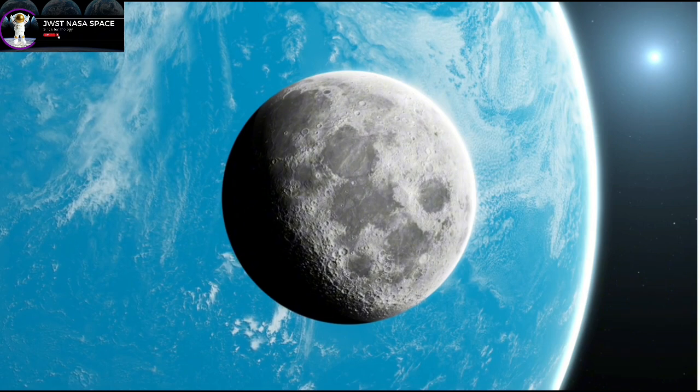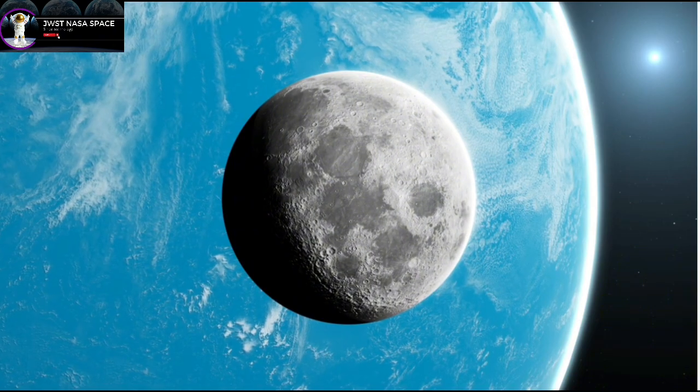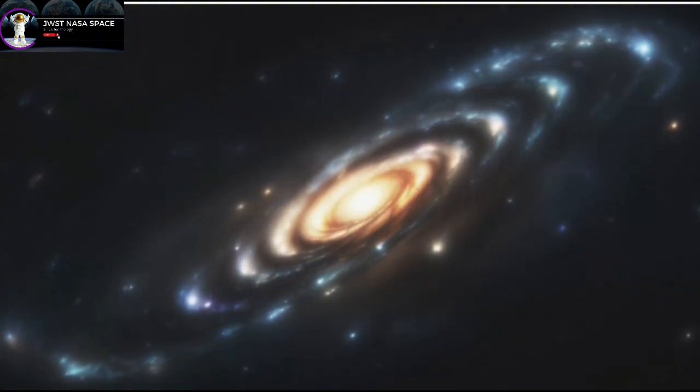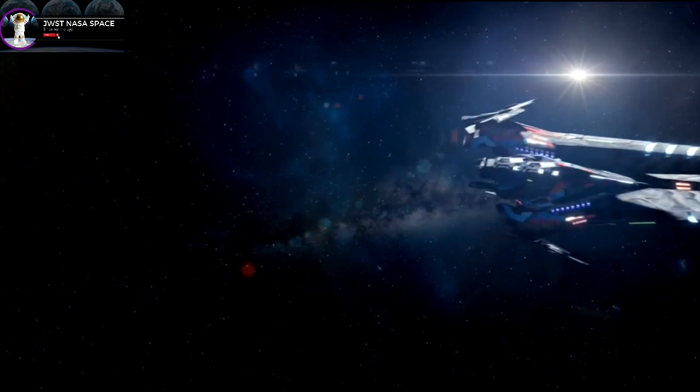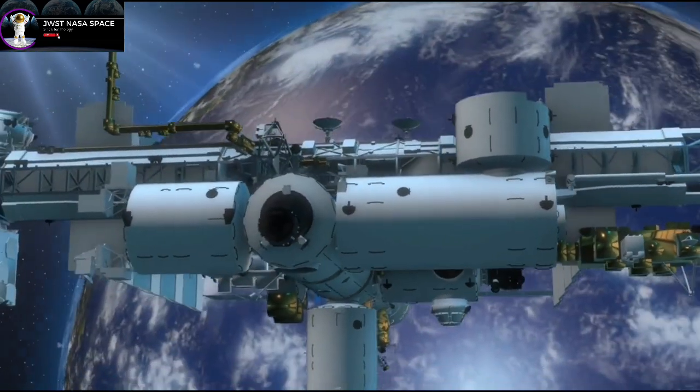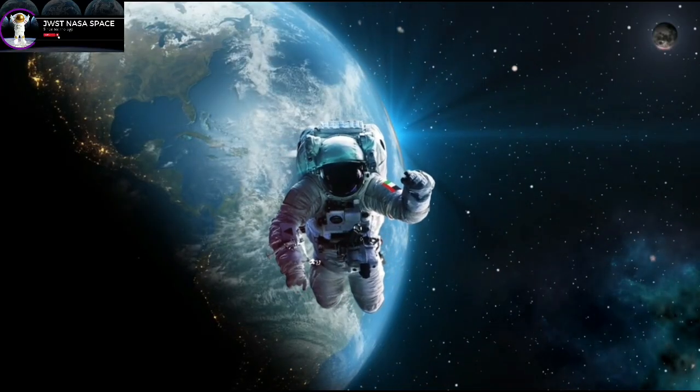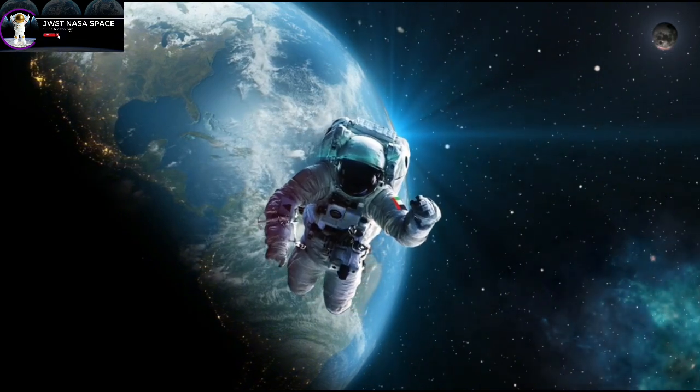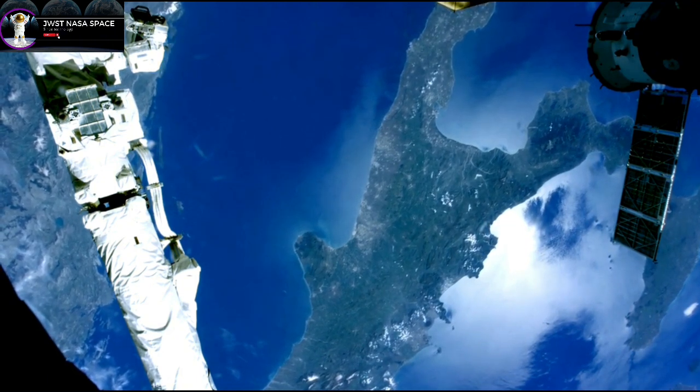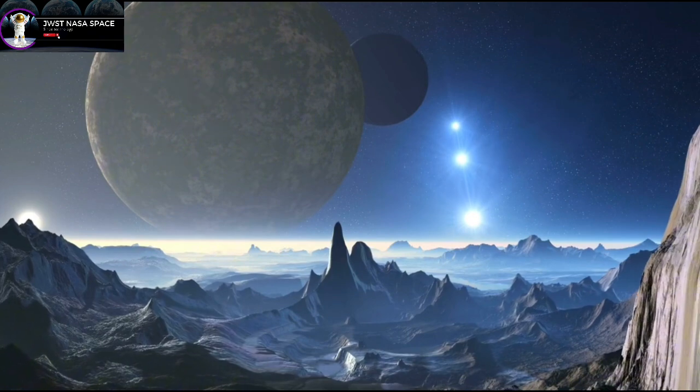There are countless exoplanets waiting to be discovered in our universe. These planets come in all shapes and sizes—some are massive gas giants while others resemble our own Earth. As of late, Proxima Centauri b, which circles the star of a similar name, has gained significant attention. This planet is classified as a potentially Earth-like exoplanet, meaning it could potentially support liquid water.